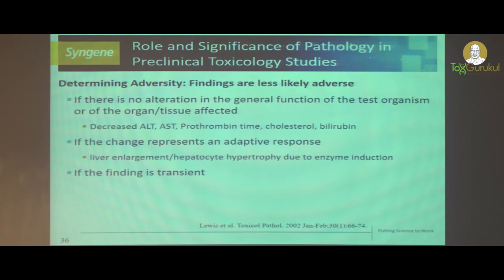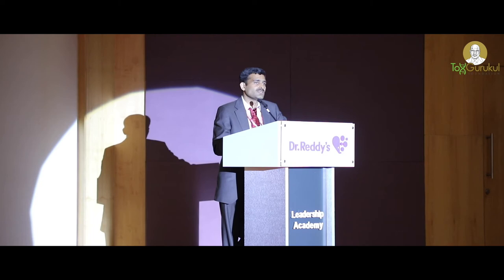Findings are less likely to be adverse if there is no alteration in the general function of the test organism. For example, a decrease in ALT, AST, prothrombin time, or bilirubin — we know that increases in these parameters have an effect on the animal, but decreases in these enzymes and parameters have no biological implication. Although you can sometimes see a decrease in ALT, there is no relevance — it is not adverse to the animal.